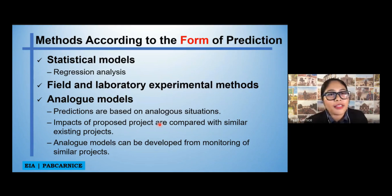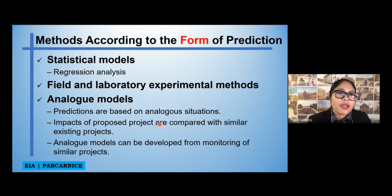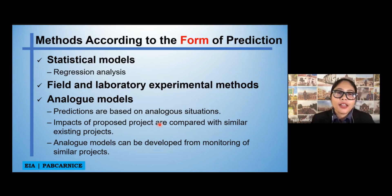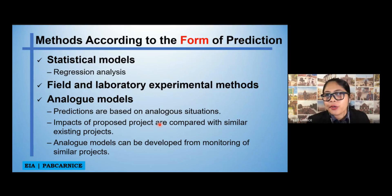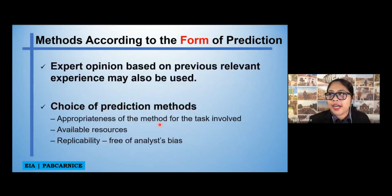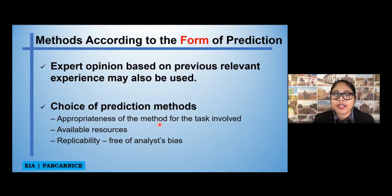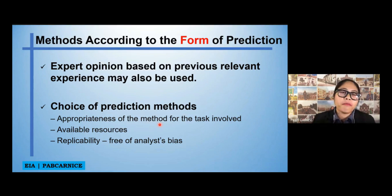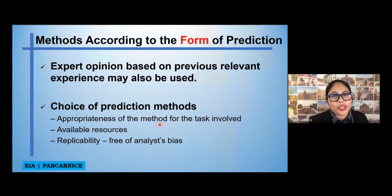We also have an analog model. These predictions are based on analog situations in which impacts of proposed projects are compared with similar existing projects. An analog model can be developed from monitoring of a similar project. One of the methods in impact prediction is also expert opinion based on previous relevant experience, which may also be used. That is why experts' judgment is very important when it comes to impact prediction.